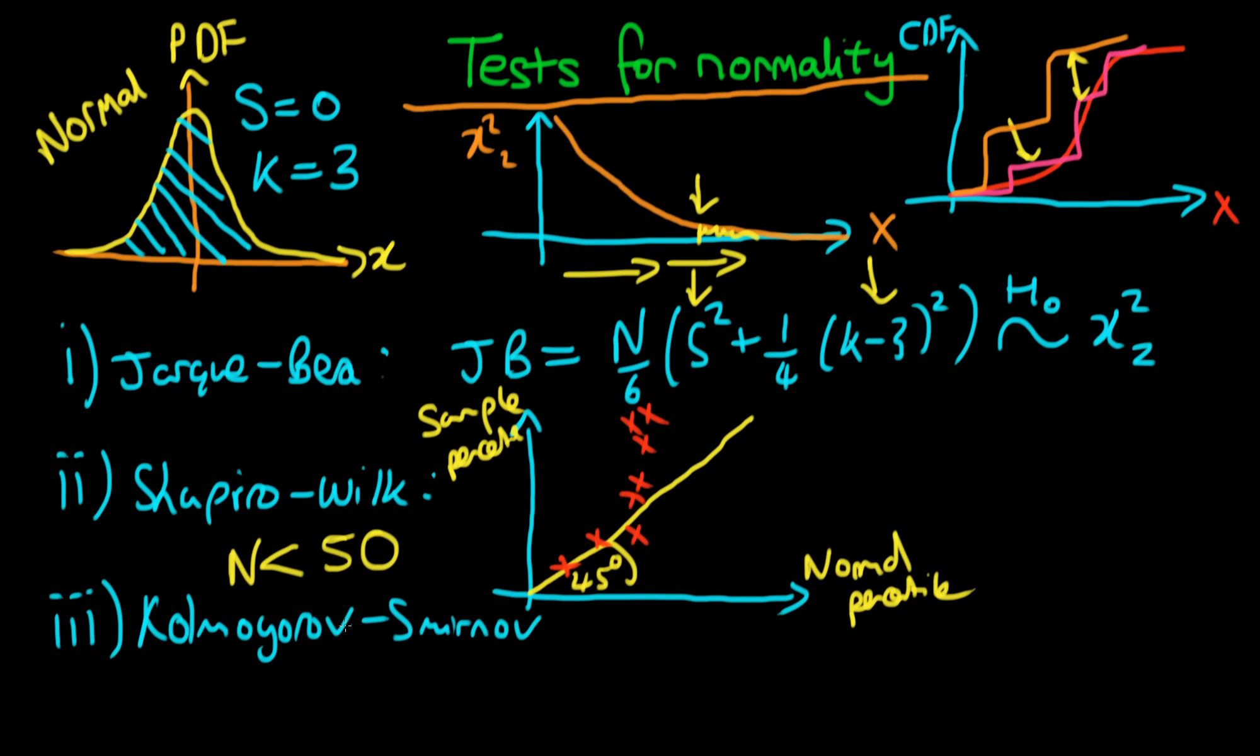Whereas the Kolmogorov-Smirnov test, ideally you need larger sample sizes. The Jacquet-Berra test is by all accounts quite a good statistic to use. It's quite different to the Shapiro-Wilk and the Kolmogorov-Smirnov test.